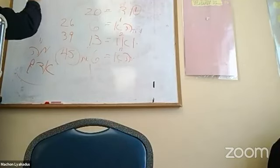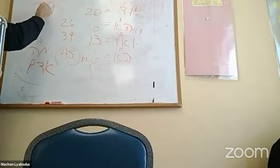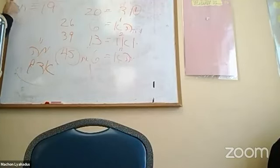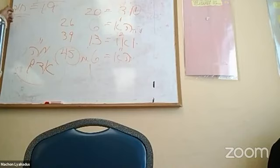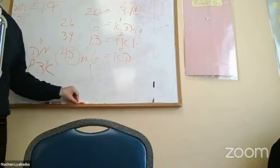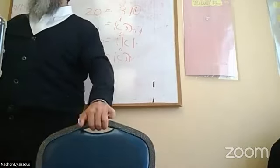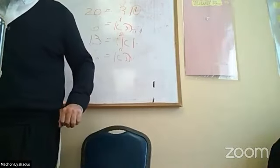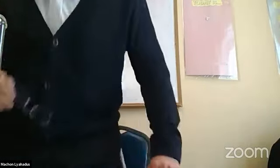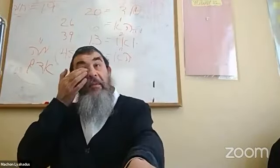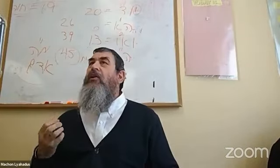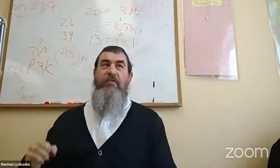45 minus 26 is how much? 19, right? Chava. Ches is 8 and 6 is 14 and Hei is 19. Behind Odom is Chava. Odom is the Eibish's name. Odom is Hashem's name. So you see what does it mean I am nothing? I am what? Why? Because I'm connected to Hashem. I'm connected to itself.